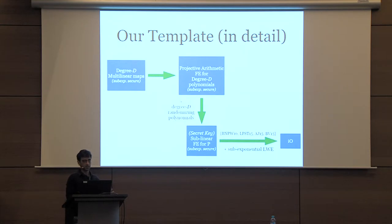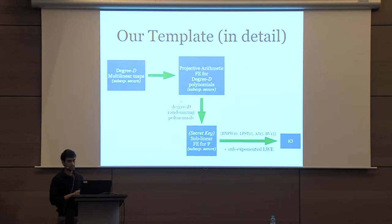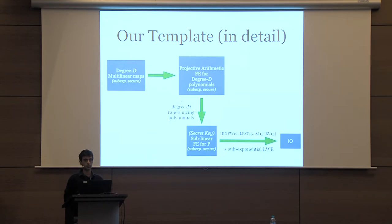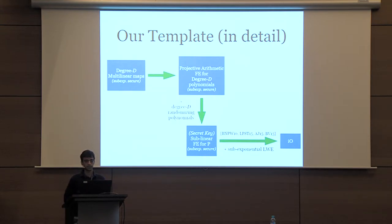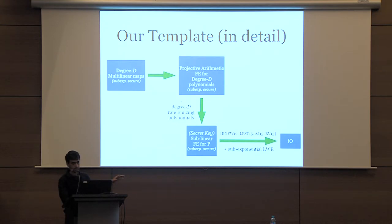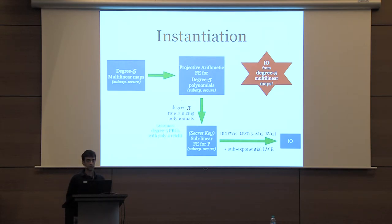We start with degree-d multilinear maps, then construct PAFE for degree-d polynomials—the D is the same in this transformation. Then we show how to construct sublinear secret-key FE for arbitrary polynomial-sized circuits starting from PAFE for degree-d polynomials and degree-d randomizing polynomials. Using prior works, we can get IO from sublinear secret-key FE for all P. When you instantiate the randomizing polynomials with degree-5 randomizing polynomials, you get IO from degree-5 multilinear maps.